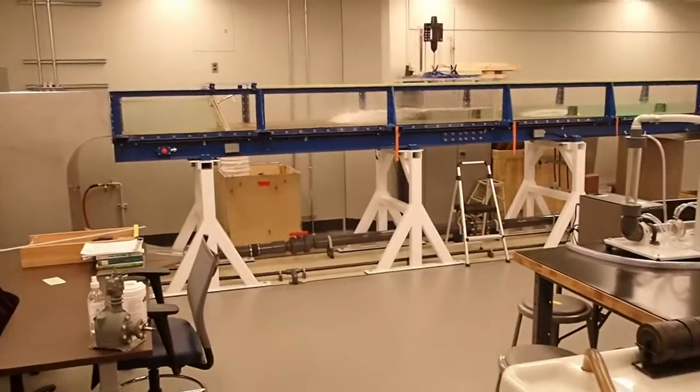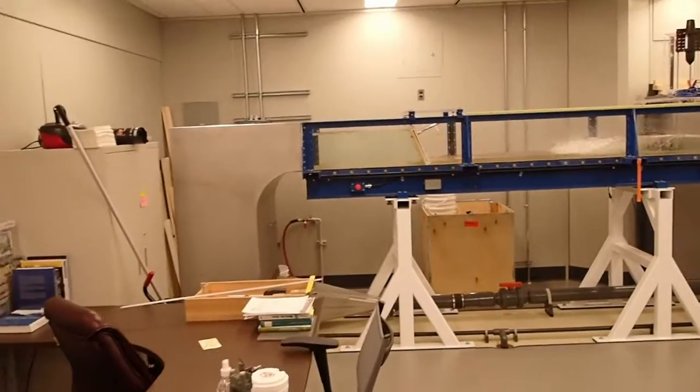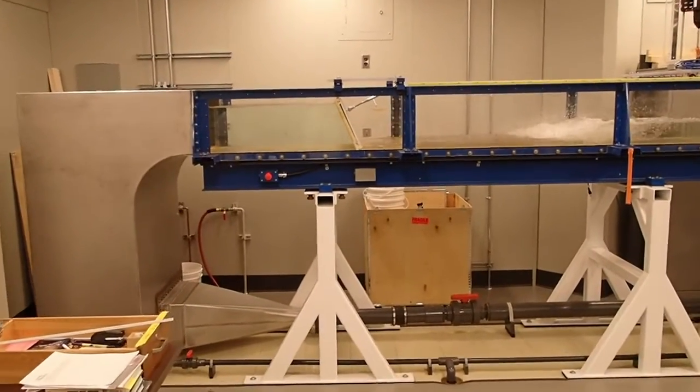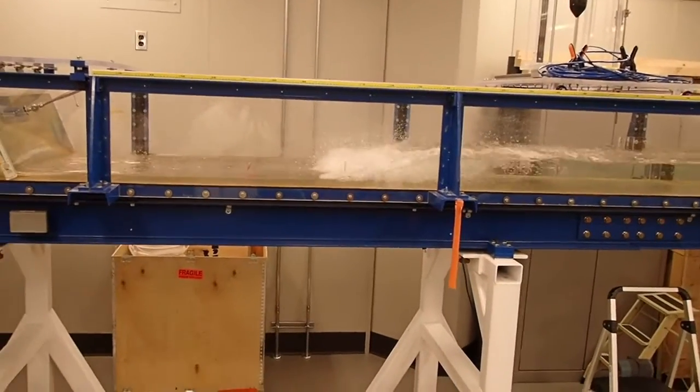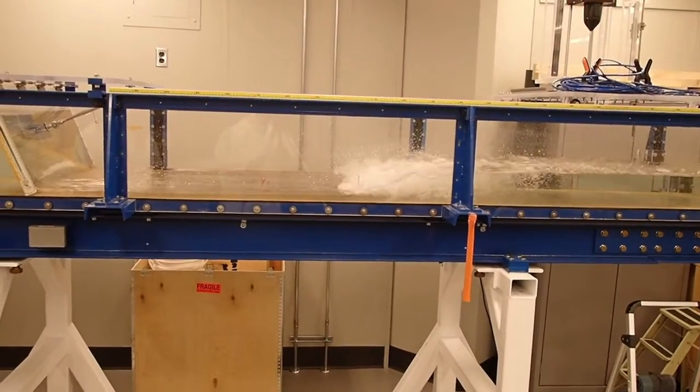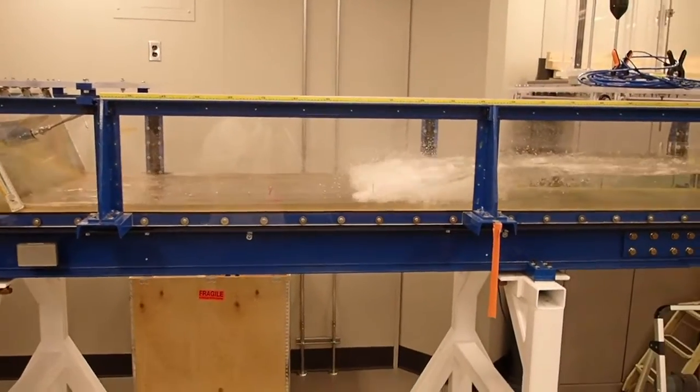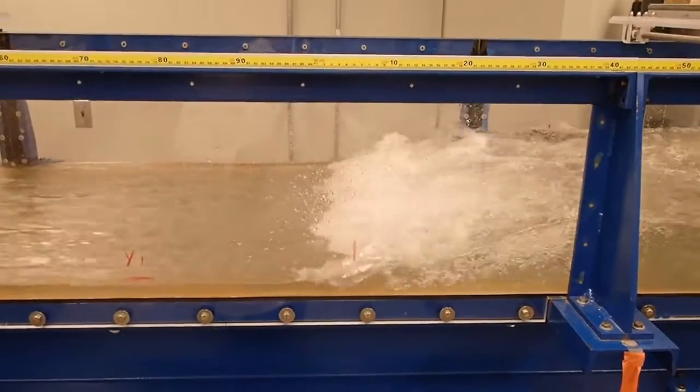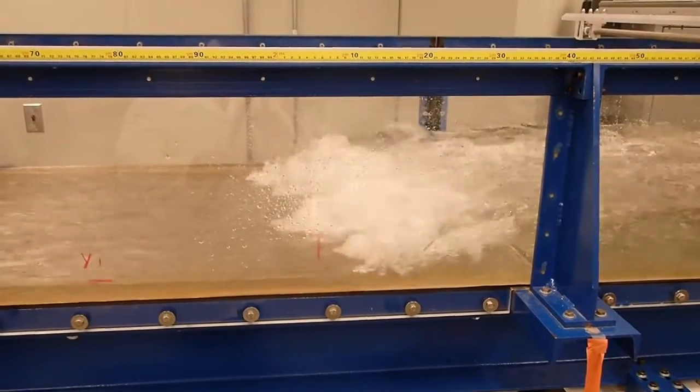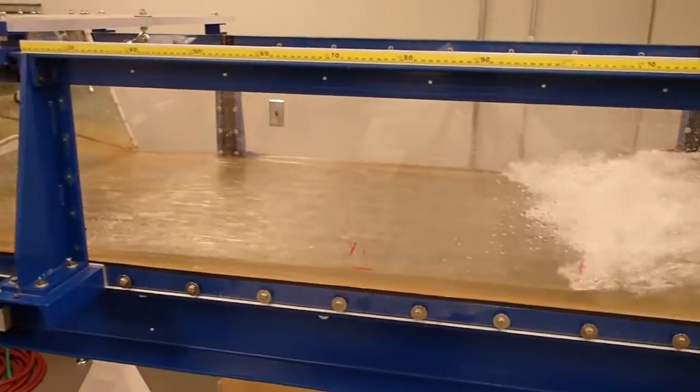In our water channel here we have a demonstration of a hydraulic jump which looks at the dissipation of energy. If this was a typical hydroelectric power plant where we have water running through a turbine, we release that water into the natural environment. We need to slow that water down so it doesn't do any damage. This is called a hydraulic jump. It dissipates the energy in this high velocity water.